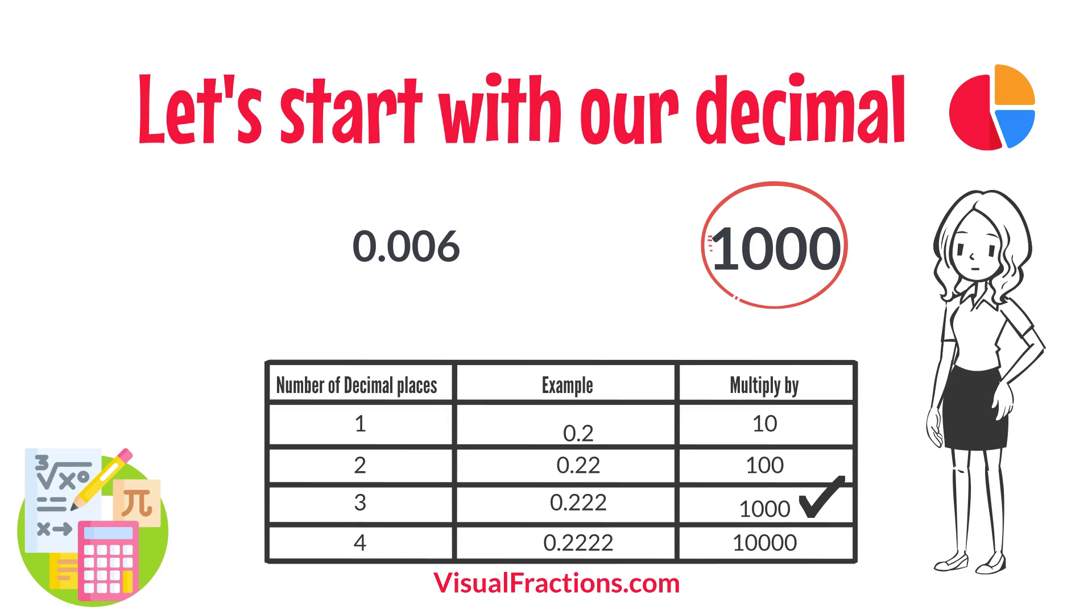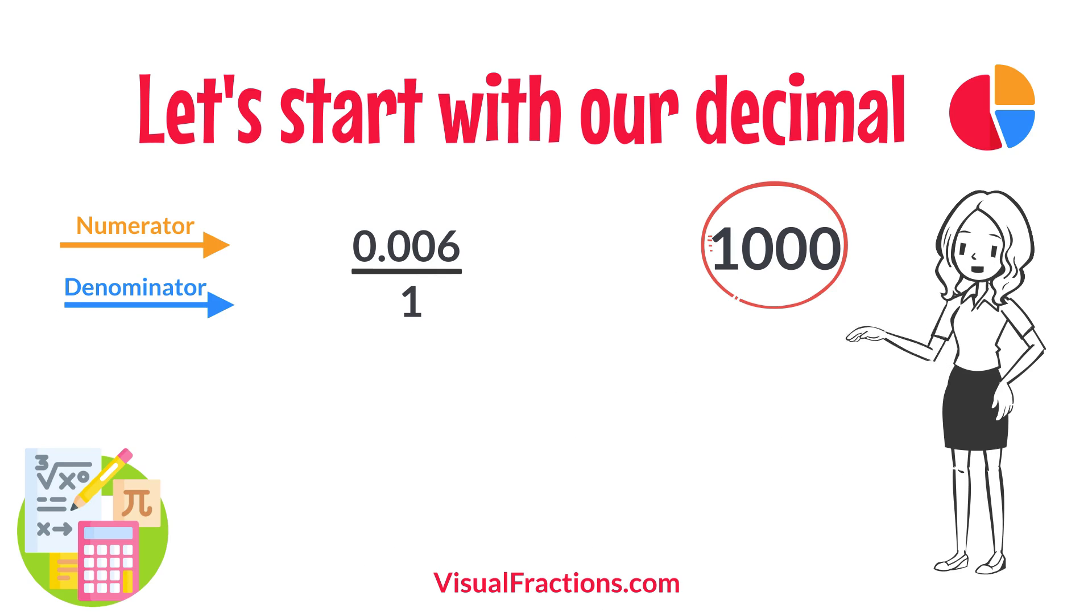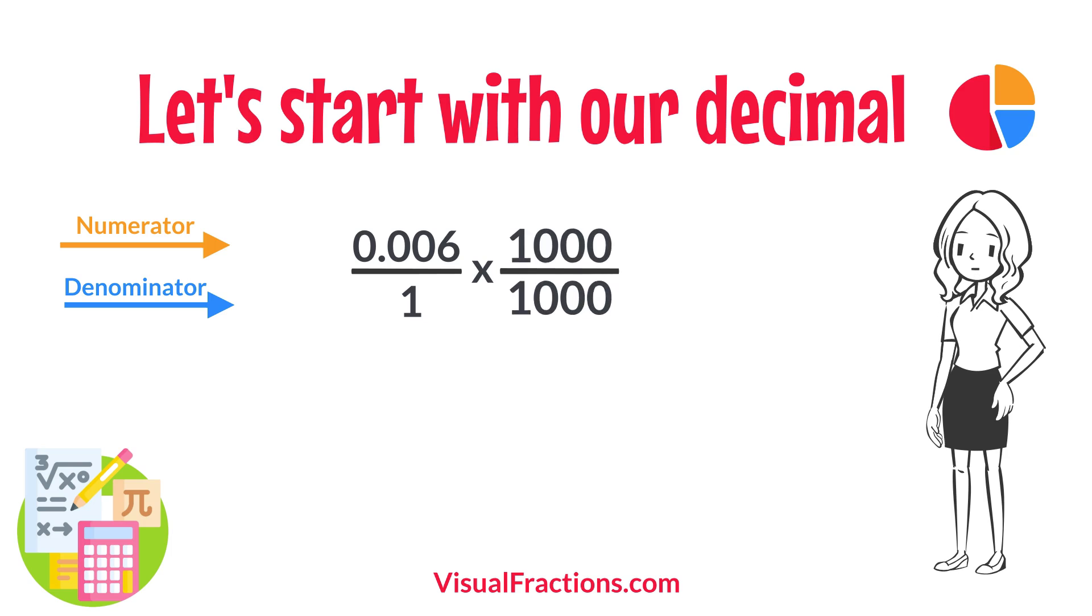To convert this decimal into a fraction, you initially put it over 1, essentially treating the decimal as the numerator in a fraction where the denominator is 1. This sets up the conversion process where we multiply both the numerator, the decimal, and the denominator, 1, by 1,000 because there are three decimal places.